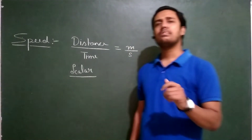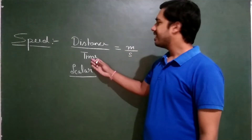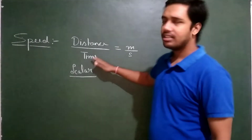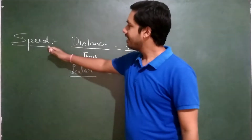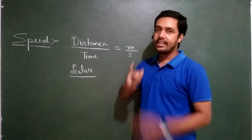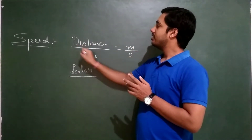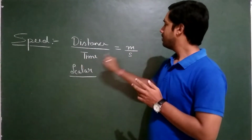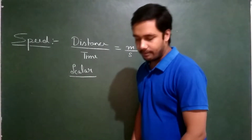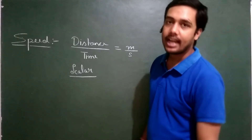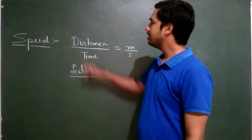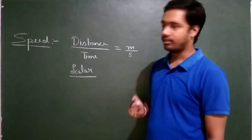Time is generally taken as positive and distance is also taken positive, so speed is also taken as positive. There are cases when speed is negative, but that is when we are taking time as negative. In general cases, speed is always taken as positive.